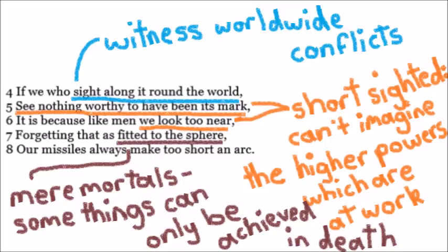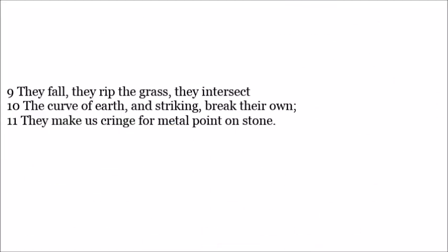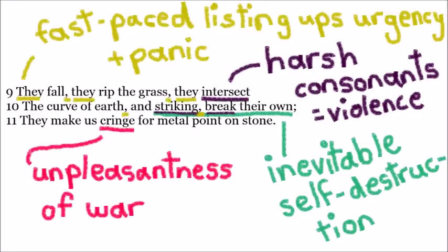Lines nine to eleven read: 'They fall, they rip the grass, they intersect the curve of earth and striking break their own, they make us cringe for metal point on stone.' These lines outline how unpleasant war seems to us — we cringe away from thinking about it. This is demonstrated through 'striking' and 'break,' which are violent words with harsh consonants conveying the tragic destruction of war. The listing and repetition of 'they' ups the pace and urgency, while 'break their own' demonstrates the inevitable, perhaps self-destructive, nature of war.